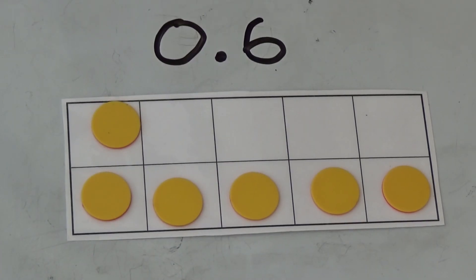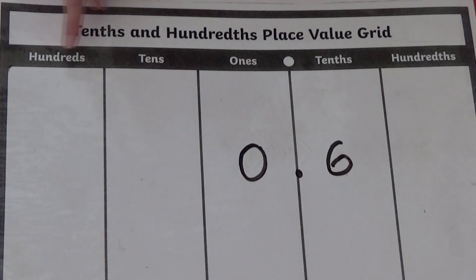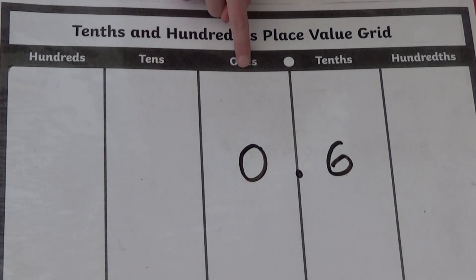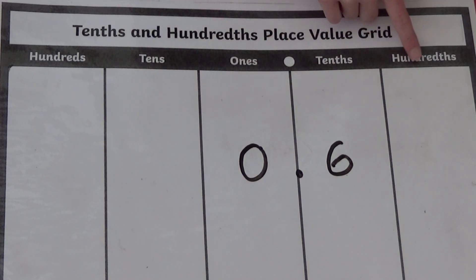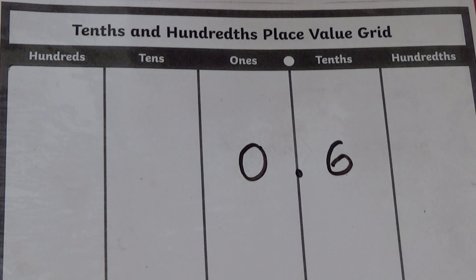So here I am showing 6 tenths of the tens frame or 0.6. I can also show this on a place value grid. Here my grid is split into hundreds, tens, ones, tenths and hundredths. For 0.6 we have nothing in the hundreds, tens and ones column, and 6 tenths in the tenths column. So I need to put in 6 tenths counters in the tenths column.